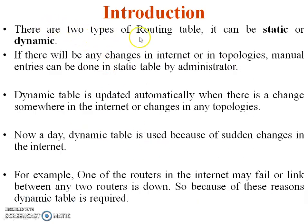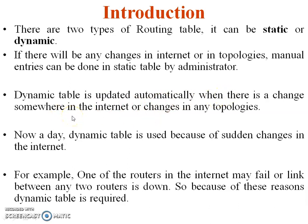There are two types of routing table. It can be static or dynamic. If there are any changes in the internet or in topology, and the routing table is static, manual entries can be done in the static table by a single administrator. A dynamic table is updated automatically when there is a change somewhere in the internet or in any topology — if you add or remove pieces inside the topology, the dynamic routing table will be updated automatically.